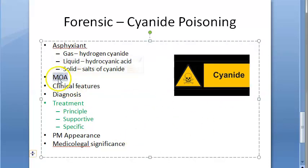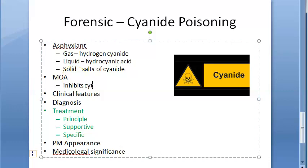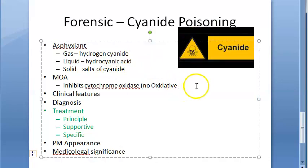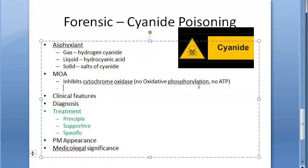The mechanism of action: cyanide inhibits cytochrome oxidase, so there is no oxidative phosphorylation and no ATP production. It works at the cellular respiration level itself. The toxic effects of cyanide are attributed to production of histotoxic anoxia — there will be no cellular respiration.